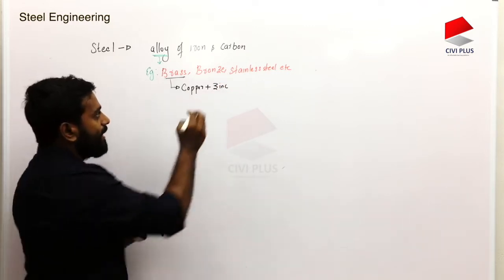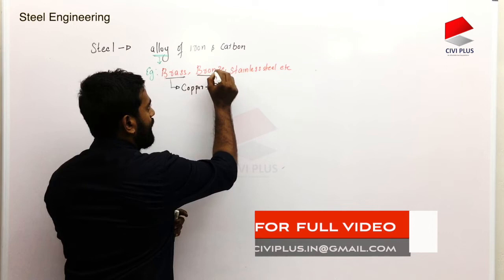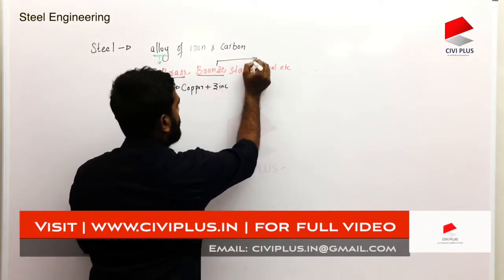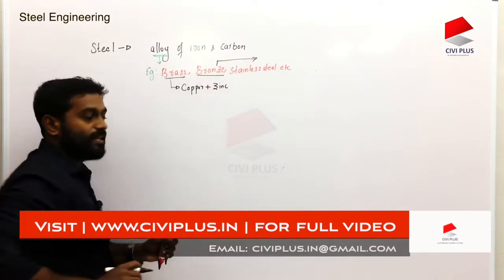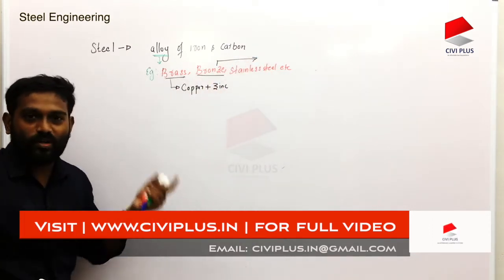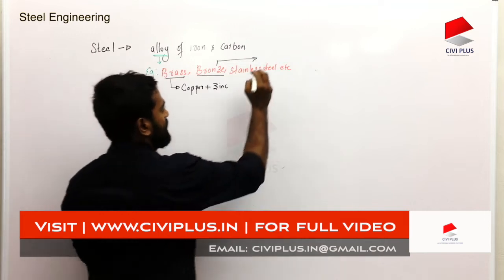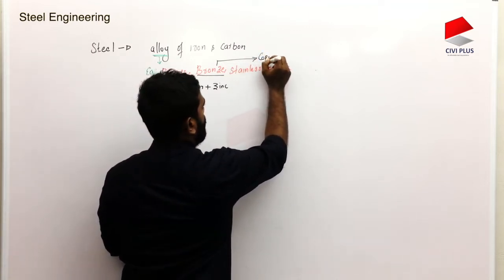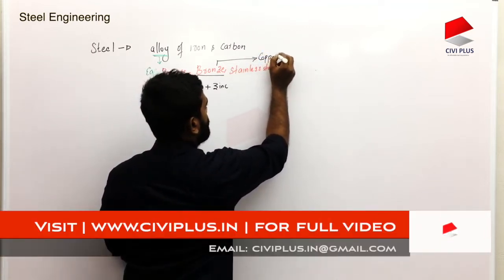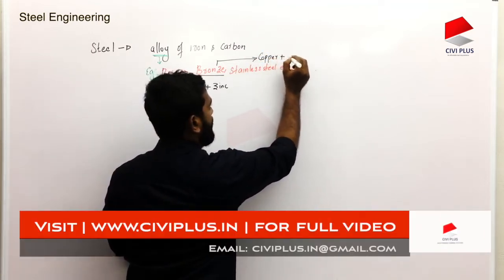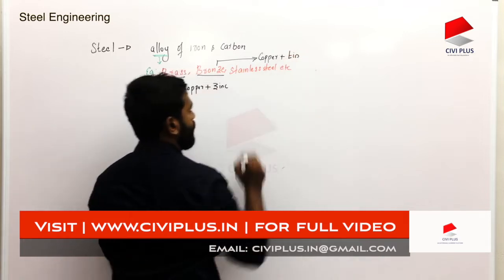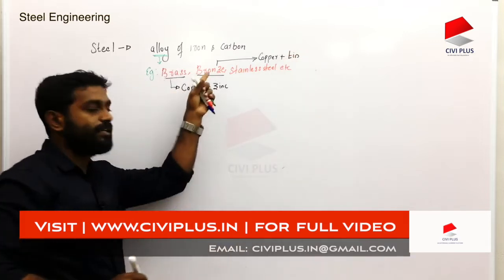What do you do when the brass comes in? The brass comes in copper. When I'm going to use copper, it has tin. When it comes in copper, it becomes tin.